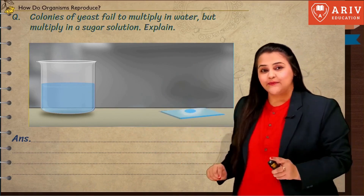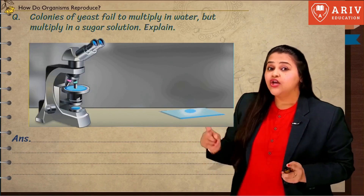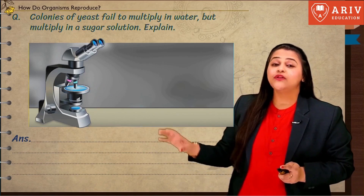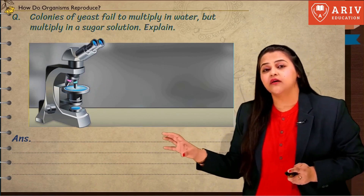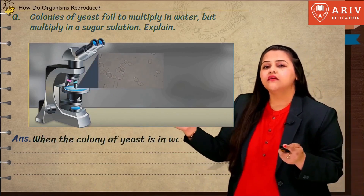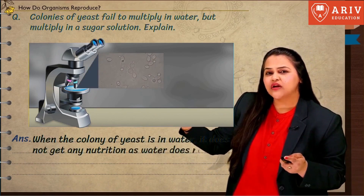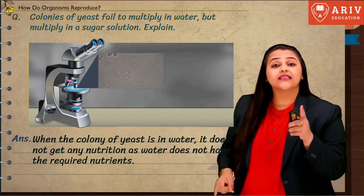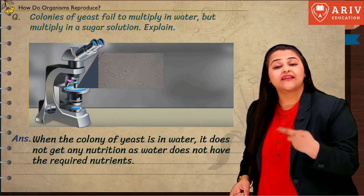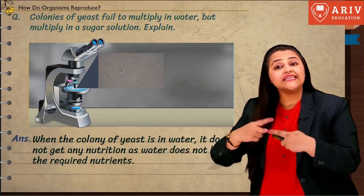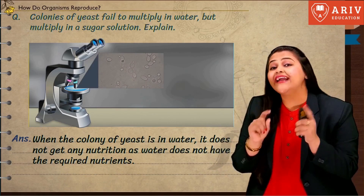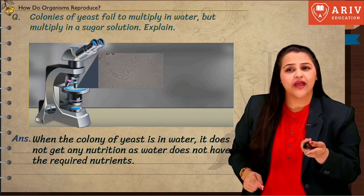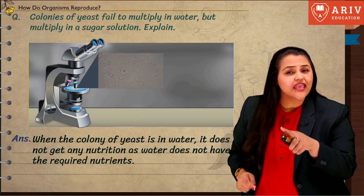After that, you observe it under the microscope. When you observe it, you see these structures — that is your yeast which is budding, which is reproducing. So where did it reproduce? It reproduced in the sugar water, because sugar gave yeast nutrition.